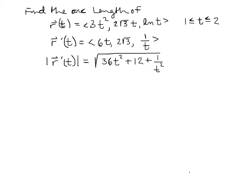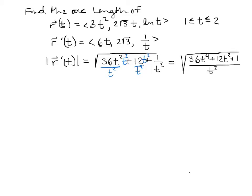As it is, this doesn't look integrable. But we can rewrite it by making a common denominator of t². Multiplying through gives us √((36t⁴ + 12t² + 1) / t²). Taking the square root of the denominator gives us t in the bottom, but the numerator is still a little messy.